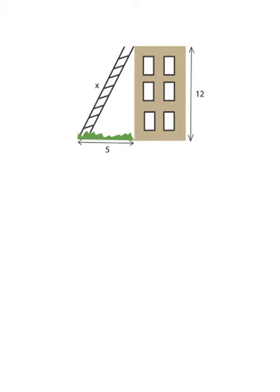Okay, look at this situation here. It looks like I have a building. And the building is 12 units high. And it looks like there is a ladder that's leaning against the building. And we're trying to figure out how long the ladder is. And it looks like the base of the ladder is five units away from the building. Well, this is a job for the Pythagorean theorem. Here is my right triangle.